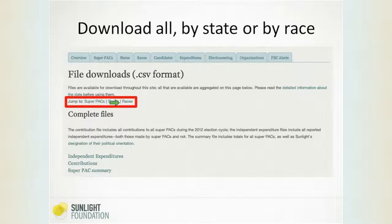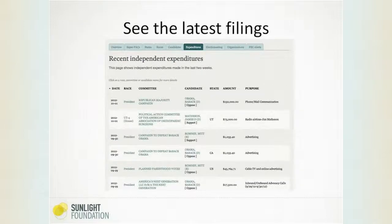One important thing to note about this data: except for primary spending by super PACs on presidential candidates, they do not show up in the state files because the FEC thinks the presidential election is a national election. So super PACs do not have to disclose that they're heavily spending in, say, Colorado, Pennsylvania, Wisconsin, Virginia, or Florida — that just appears as national numbers. If you're following the presidential race, we can't help with that here, although we will have a webinar next week about a new tool Sunlight is putting out — Political Ad Sleuth — that will help you track spending on ads by state in the presidential contest.